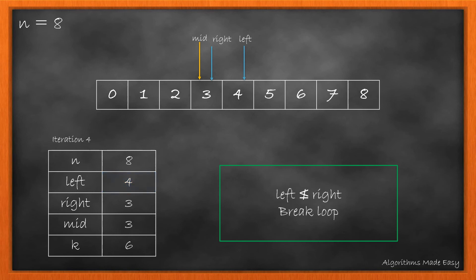This time, the looping condition fails as left is not less than right. This breaks the loop and we return right which in our case is 3.